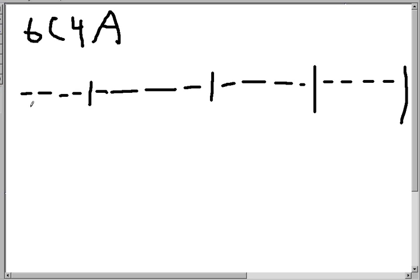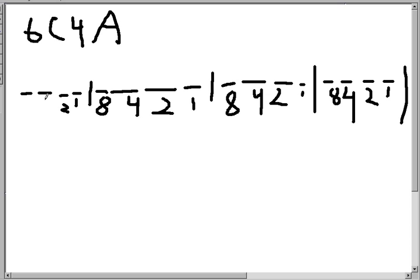So how this works is we do 1, 2, 4, 8 for each column, multiplying by 2 each time. So 1, 2, 4, 8, then 1, 2, 4, 8, then 1, 2, 4, 8, then 1, 2, 4, 8. This is 4-bit coding. And then all we do is add 1s to the positions that will add up to the number.